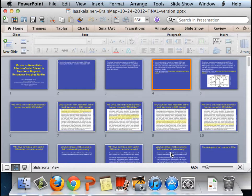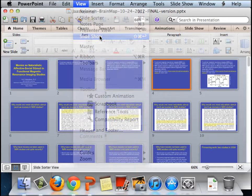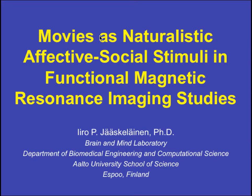He is currently a senior scientist at Aalto University in Finland. He is a cognitive neuroscientist who uses imaging and psychophysics to investigate perceptual and cognitive functions, including emotion and social cognition. Today he is going to share some of the work he has done to use movies as naturalistic stimuli in MRI studies. Welcome.